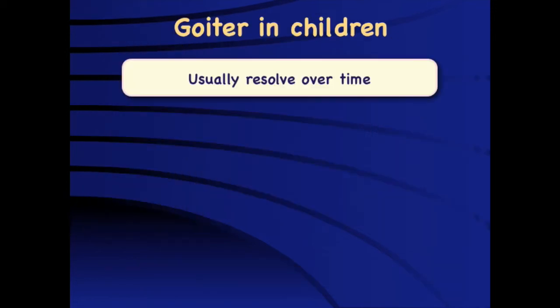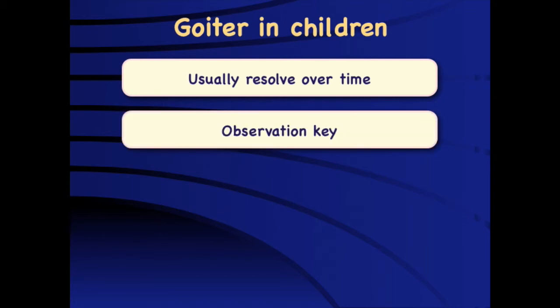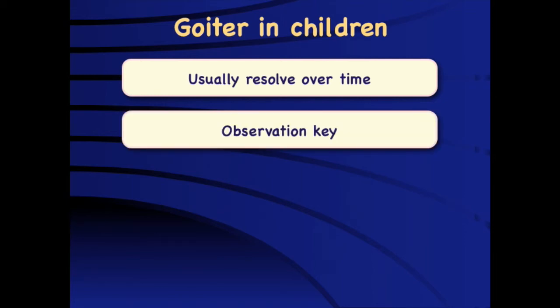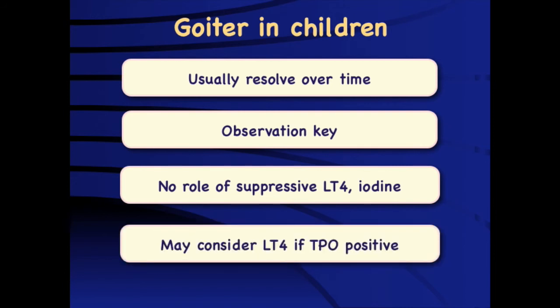Goiter in children is common and usually resolves over time; observation is the key. There is no role for suppressive thyroxine or iodine treatment. However, thyroxine should be considered if the child is TPO antibody positive, as there is a risk of progression in that situation and treatment may be beneficial.